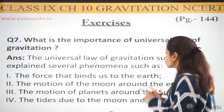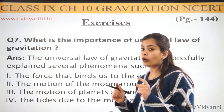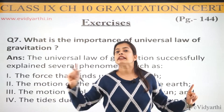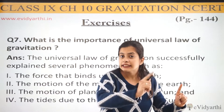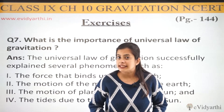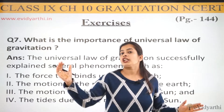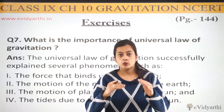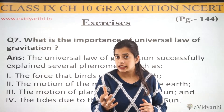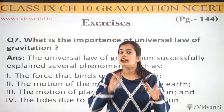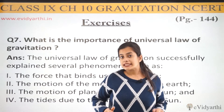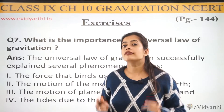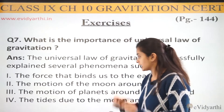Next, the motion of the moon around the earth. The moon, being a natural satellite, easily orbits the earth — it neither falls towards the earth nor does the earth pull it too close. A balance is maintained. Where does this come from? From the concept of the universal law of gravitation.